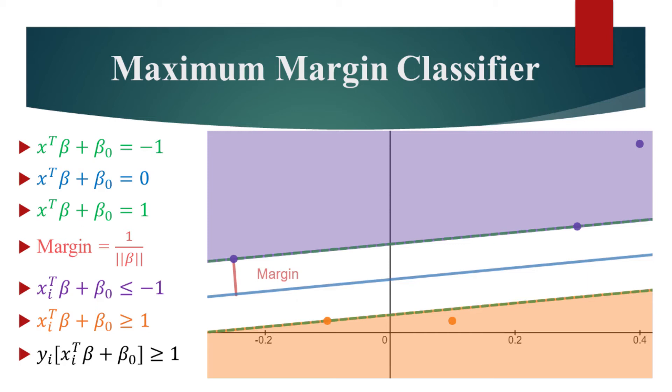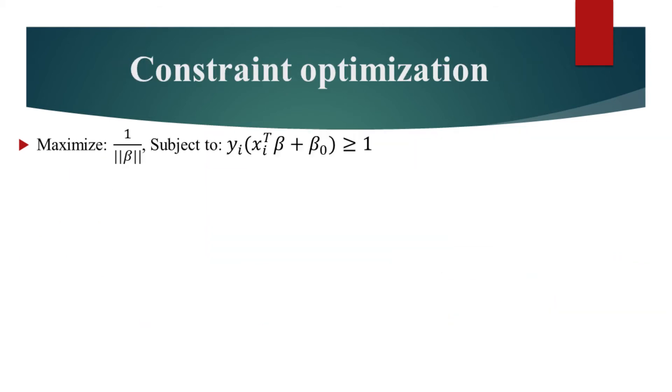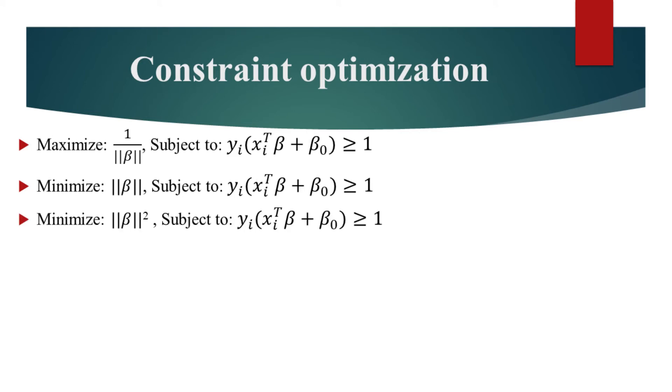Let's now solve this constraint optimization problem. First, we simplify by turning it into a minimization problem. Then, we make the problem convex by using the squared Euclidean norm instead.